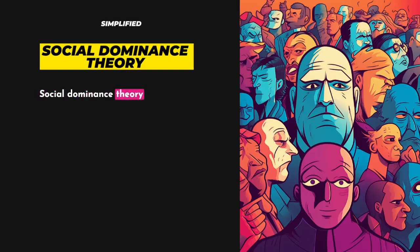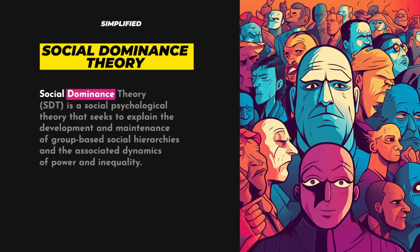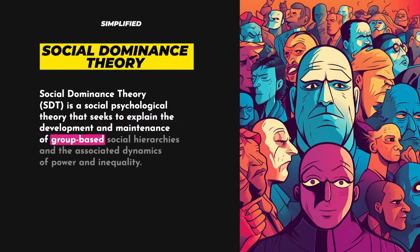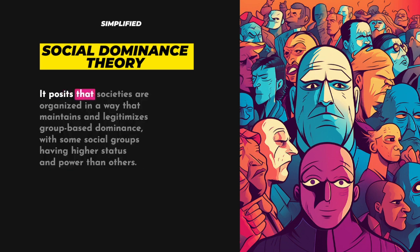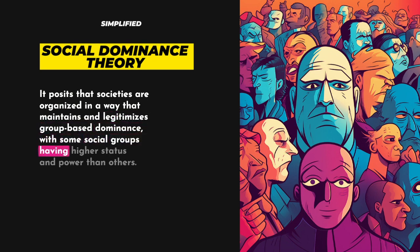Social Dominance Theory is a social psychological theory that seeks to explain the development and maintenance of group-based social hierarchies and the associated dynamics of power and inequality. It posits that societies are organized in a way that maintains and legitimizes group-based dominance, with some social groups having higher status and power than others.